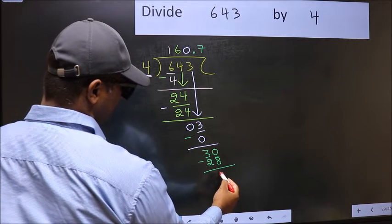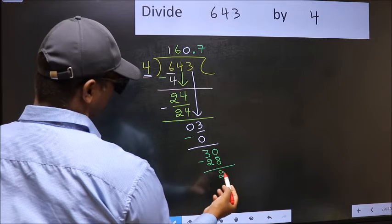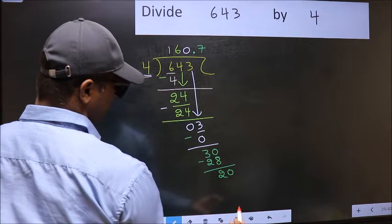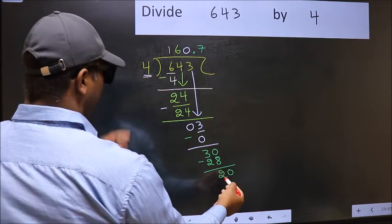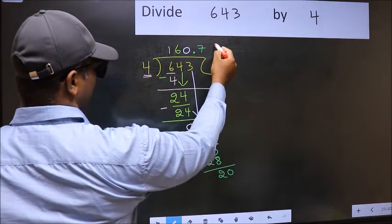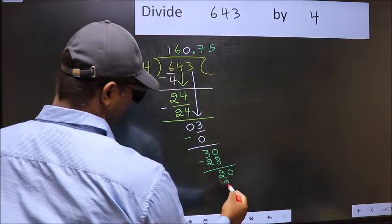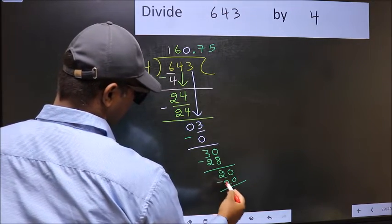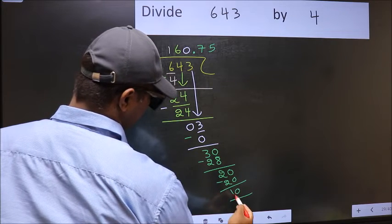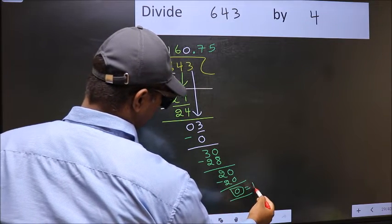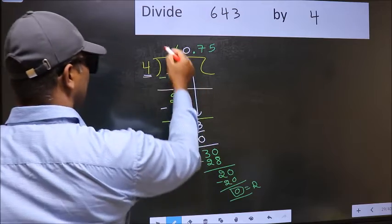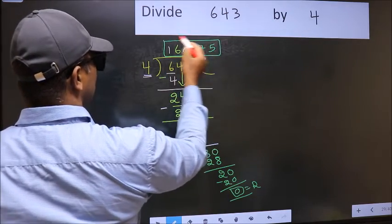We already have decimal, so directly take 0. When do we get 20 in the 4 table? 4 times 5 is 20. Now you subtract, you get 0. So this is our remainder and this is our quotient.